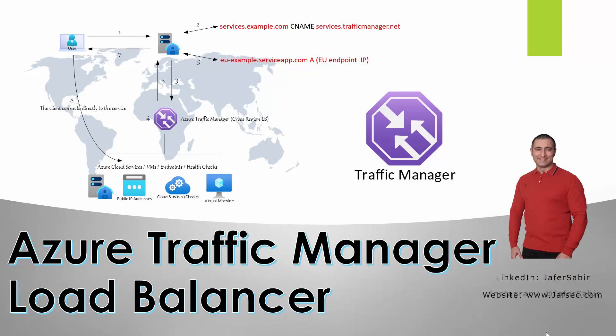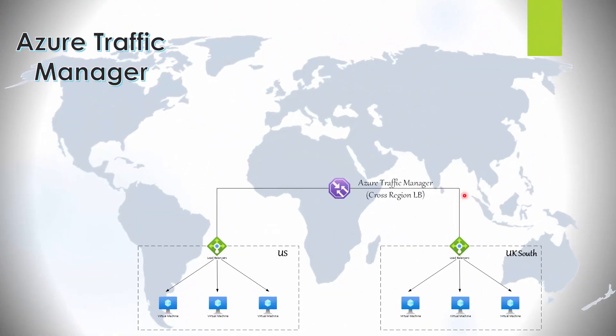In this video we will have a look at the Azure Traffic Manager, which is a global load balancer. It's able to load balance traffic across multiple regions. Looking at the slide here, we can see the Azure Traffic Manager distributing traffic to two regions — one somewhere in the US and another in UK South — providing multi-geographical location redundancy across two different regions.